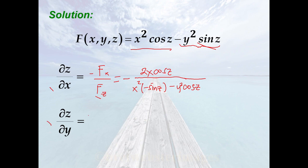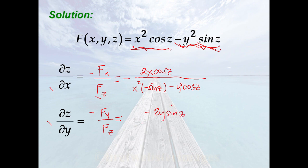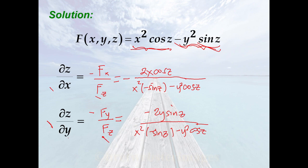For the partial of z with respect to y, recall it equals the negative of the partial of f with respect to y over the partial of f with respect to z. Treating both x and z as constants, the derivative of the first term with respect to y is 0. For the second term, we get −2y sin(z). We already know the partial of f with respect to z is −x² sin(z) − y² cos(z). So the partial of z with respect to y equals the negative of (−2y sin(z)) over (−x² sin(z) − y² cos(z)).